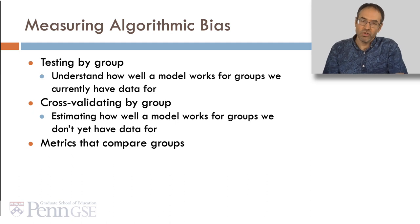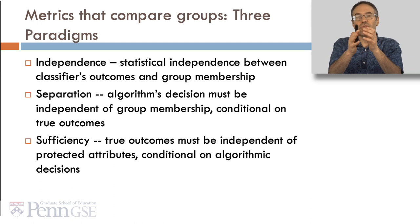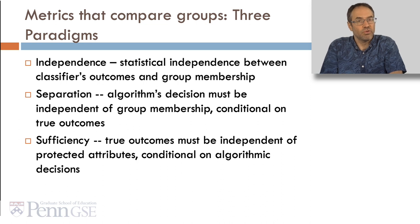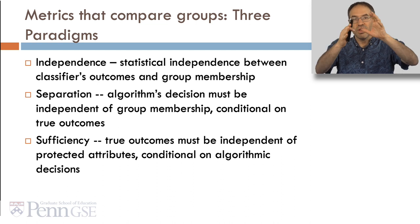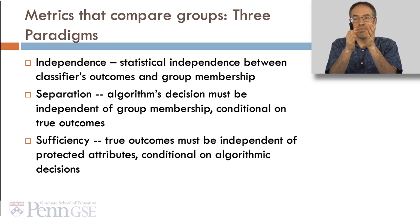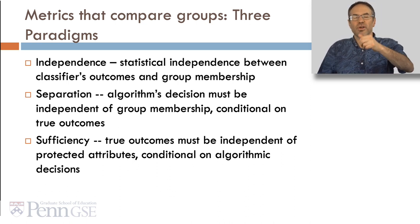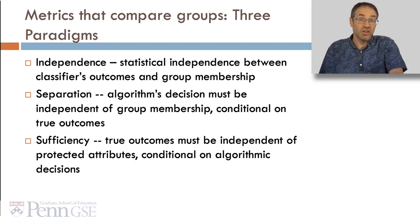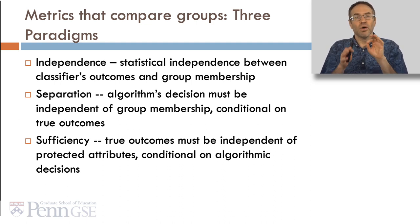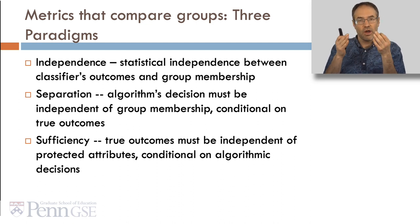A third approach is metrics that explicitly compare group performance to each other. In terms of metrics that compare groups, there are three broad paradigms. Independence looks at whether there's statistical independence between the classifier's outcomes and group membership — if the classifier's outcomes are dependent on group membership, you've got a problem. The second is separation, which says that an algorithm's decision must be independent of group membership conditional on the true outcomes. The third is sufficiency, where true outcomes must be independent of protected attributes conditional on the algorithmic decisions.